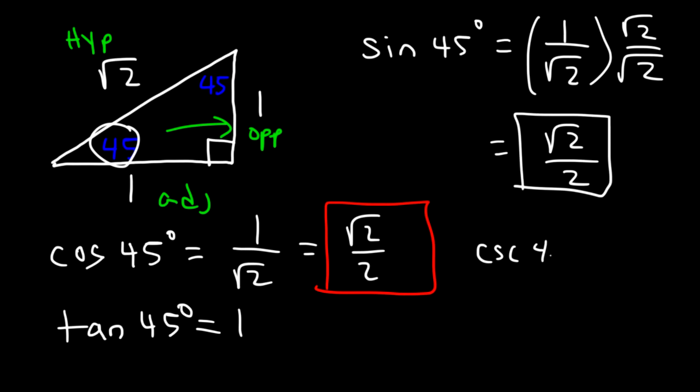Cosecant and secant 45 will be the same. If you want to find cosecant 45, if you know sine is opposite over hypotenuse, cosecant is going to be hypotenuse divided by opposite. So it's root 2 over 1, or simply flip this fraction. The square root of 2 over 1 is just the square root of 2.